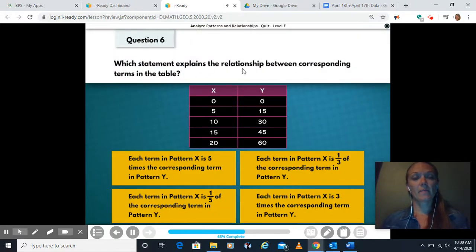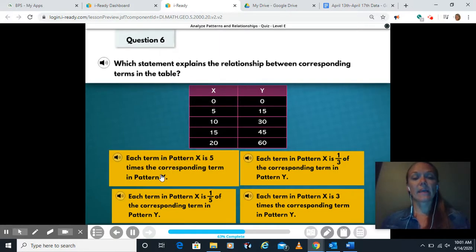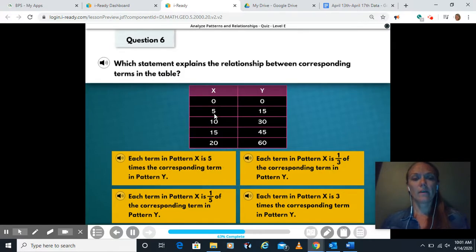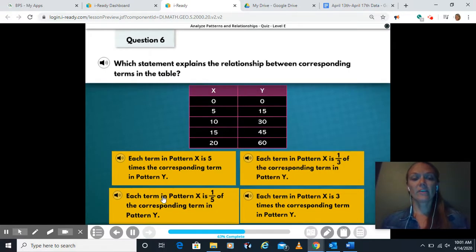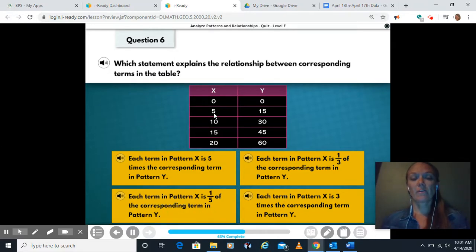Which statement explains the relationship between corresponding terms in the table? So is each term in pattern X is five times the corresponding term in pattern Y? Let's see it. Is five five times bigger than fifteen? Is ten five times bigger than thirty? No. Each term in pattern X is a fifth of the corresponding term in pattern Y. So is five a fifth of fifteen? So like fifteen divided by five would be five. Is ten a fifth of thirty? If I did thirty divided by five, would I get ten? No, that one doesn't work.